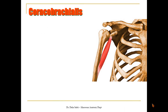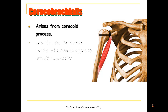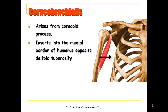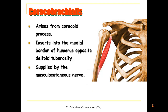For the coracobrachialis, it arises from the coracoid process of the scapula and inserts into the medial border of the humerus opposite the deltoid tuberosity. It is supplied also by the musculocutaneous nerve and it is a weak flexor of the shoulder.